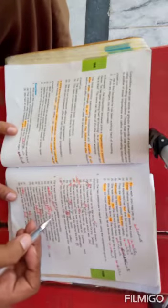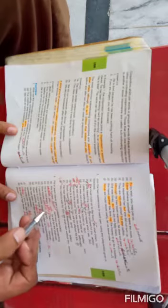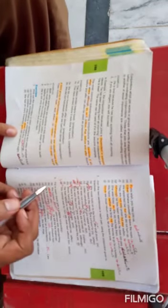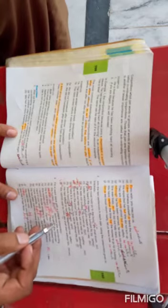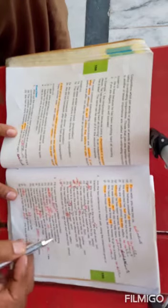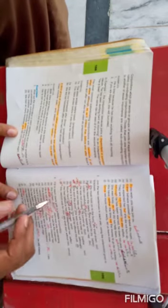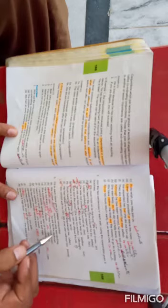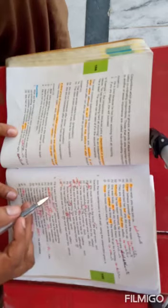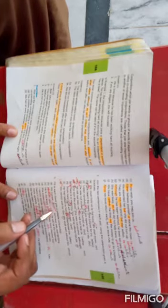Sentence number A: We hurried dash darkness was approaching. Is blank mein conjunction 'because' use hooga. We hurried because darkness was approaching. Aap pencil se is blank mein conjunction 'because' likhenge.